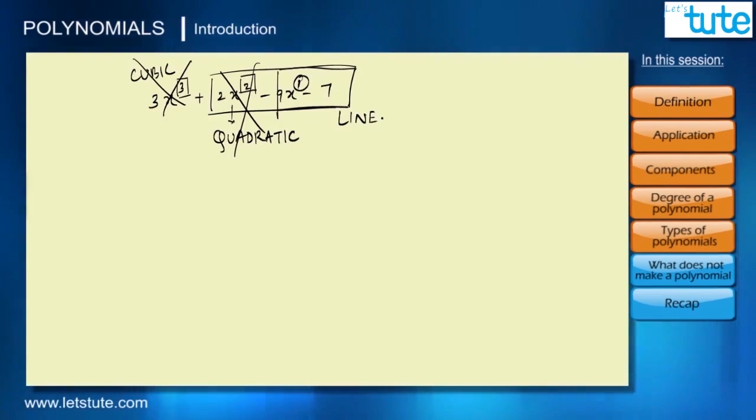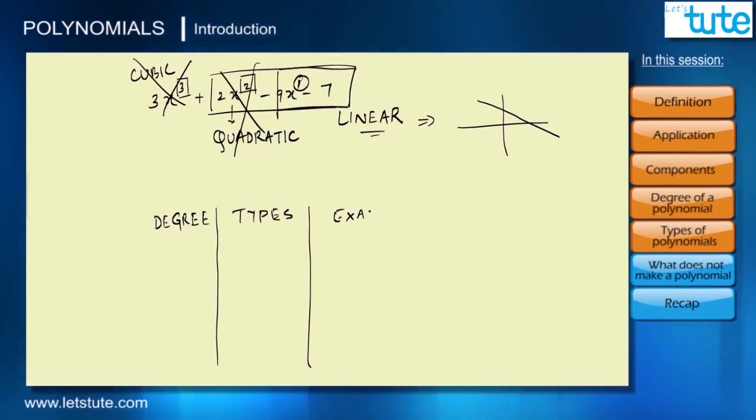Let us make a table so we remember it properly. First column would be degree, then we have types of polynomials, then an example so we understand it better.